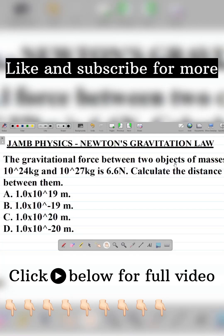The gravitational force between two objects of masses 10 to the power 24 kg and 10 to the power 27 kg is 6.6 newton. Calculate the distance between them.